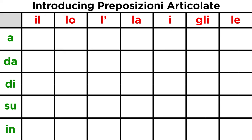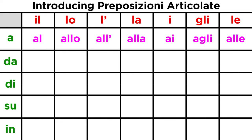Let's push the prepositions across each row to see how they combine with the various articles. For a, we get: al, allo, al, alla, ai, agli, alle.